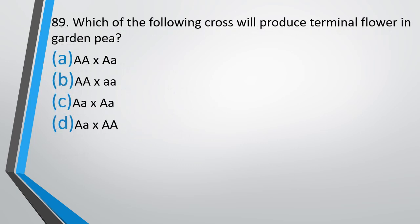Question number 89: Which of the following crosses will produce terminal flowers in a garden pea? The crosses are given in the options. The correct answer is option C — capital A, small a, capital A, small a.